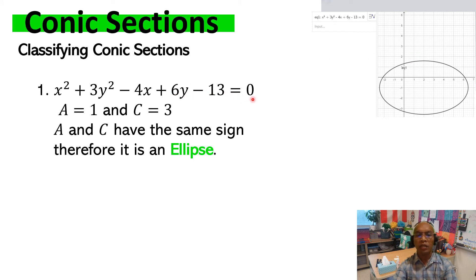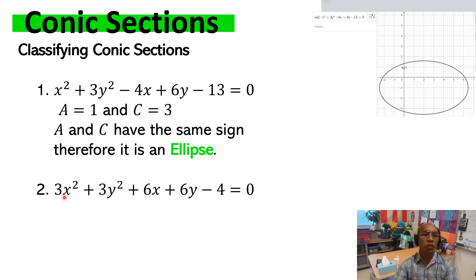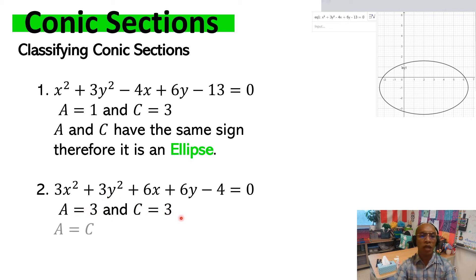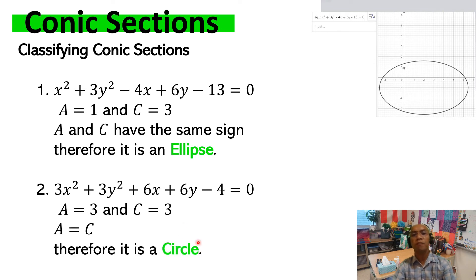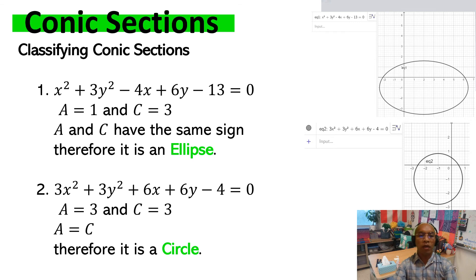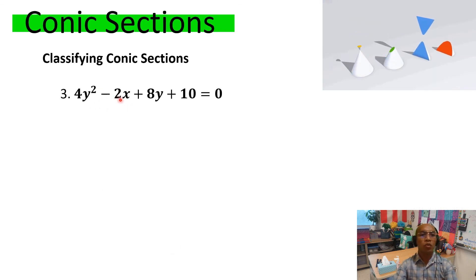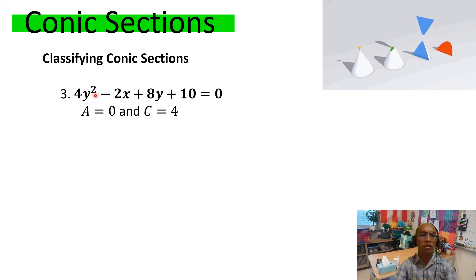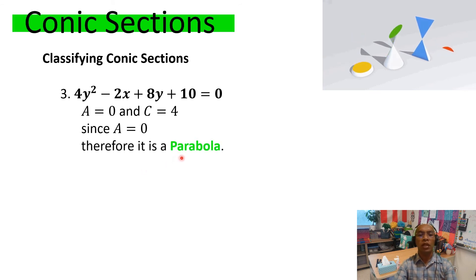Example 1: x² + 3y² − 4x + 6y − 13 = 0. A is positive 1 and C is positive 3. They are not equal but have the same sign, so this is an equation of an ellipse. Example 2: 3x² + 3y² + 6x + 6y − 4 = 0. A equals 3 and C also equals 3 — both the same sign and equal. Therefore, this is an equation of a circle, and in fact, a circle is a special type of ellipse. Example 3: 4y² − 2x + 8y + 10 = 0. Here A is zero because there is no x² term, and C equals 4. Therefore this is an equation of a parabola.